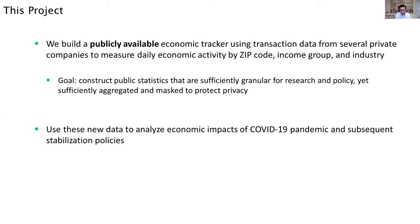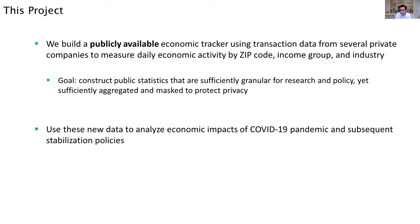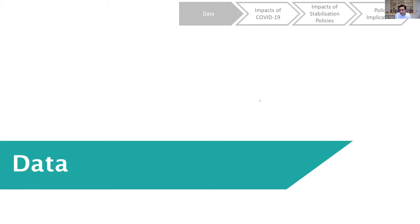In the bulk of this presentation, I'll focus on how we use these new data to analyze the economic impacts of COVID-19 and the impacts of various stabilization policies. First, let me tell you about the data we construct, starting with our partners. For consumer spending, we use information from credit card aggregators — in particular, Affinity Solutions, which sees about 10% of credit and debit card transactions in the US and manages loyalty programs for various credit card companies. We're also incorporating data from MasterCard, which has another big window into spending activity.